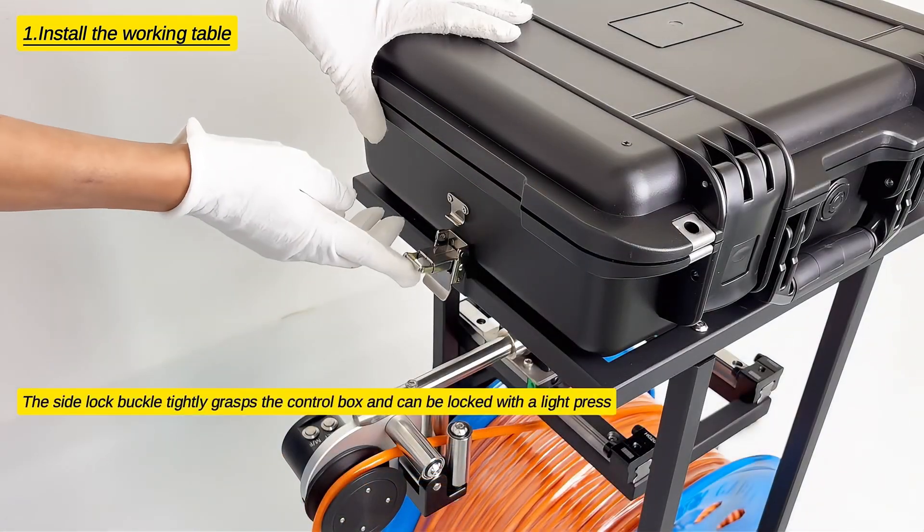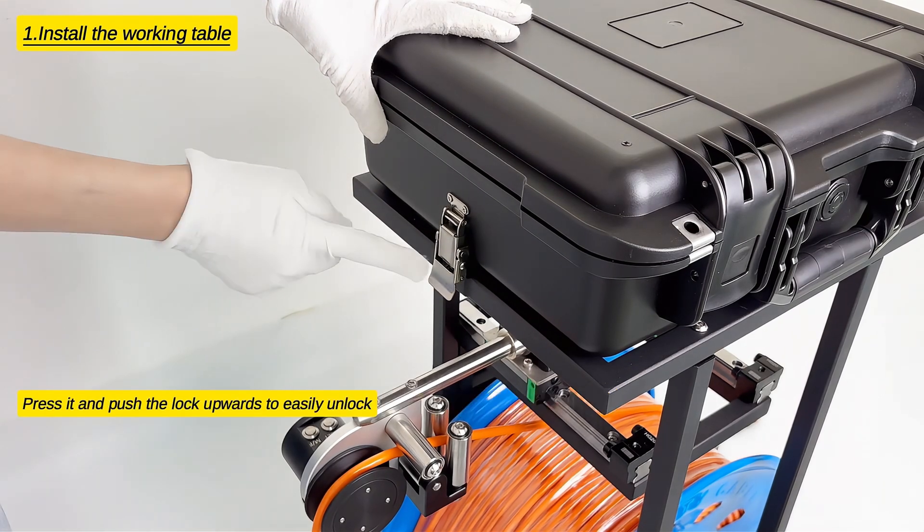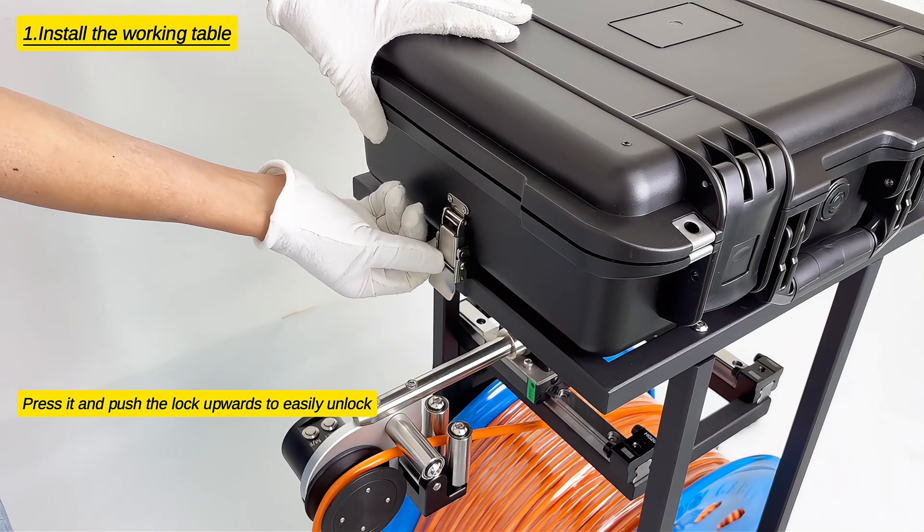The side lock buckle tightly grasps the control box and can be locked with a light press. Press it and push the lock upwards to easily unlock.